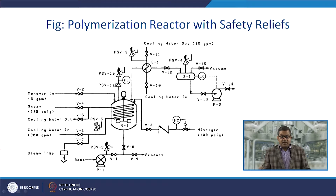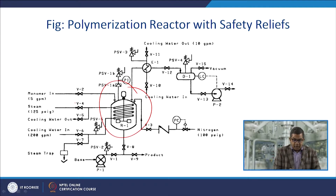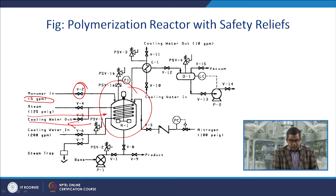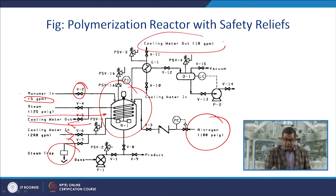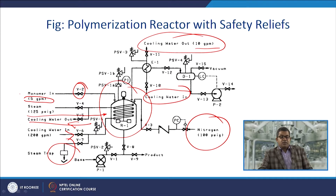Another example is a polymerization reactor with a safety relief. The reactor contains monomer at a specified flow rate, with steam injection and cooling water in and out, a steam trap, and nitrogen purging, operating under vacuum. The cooling water provides the cooling medium, and the reaction is assumed to be exothermic. The system is equipped with different pumps and steam traps.